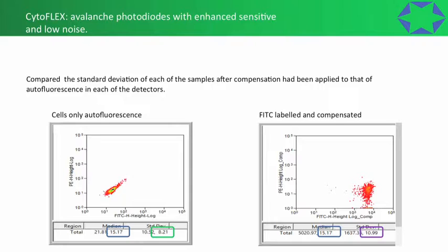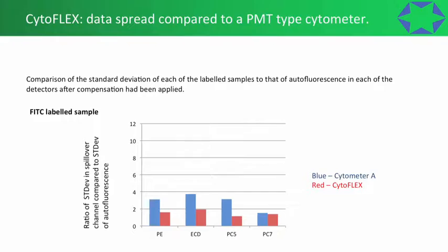We have cells only with a typical slanty autofluorescence profile across two channels. The mean fluorescent intensity shown on the y-axis — the spillover from FITC at 15.7 in the compensated plot — is identical to the cells-only autofluorescence, confirming correct compensation. But the standard deviation in the spillover channel is slightly increased in the compensated data, which we typically see. I ratioed the standard deviation in the spillover channel to that of the autofluorescence to enable comparison across different cytometers.